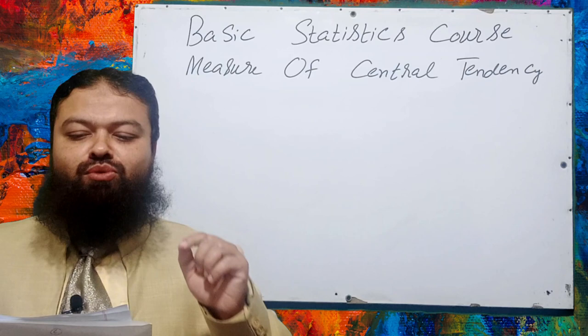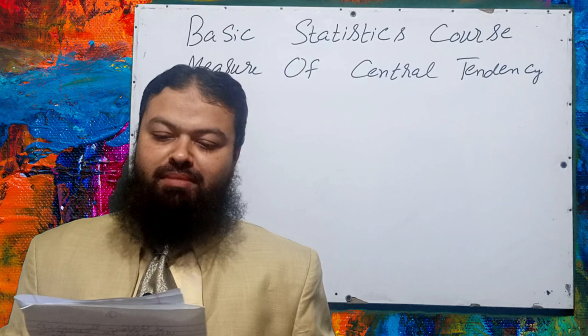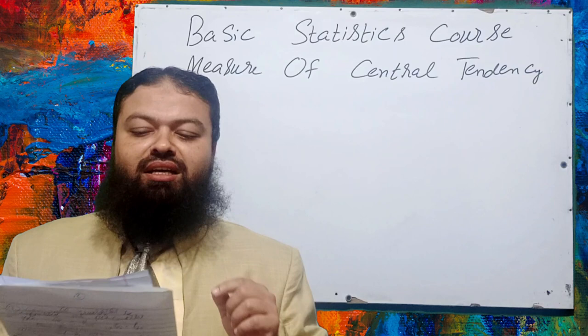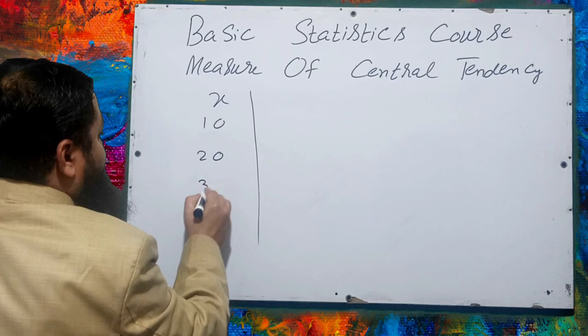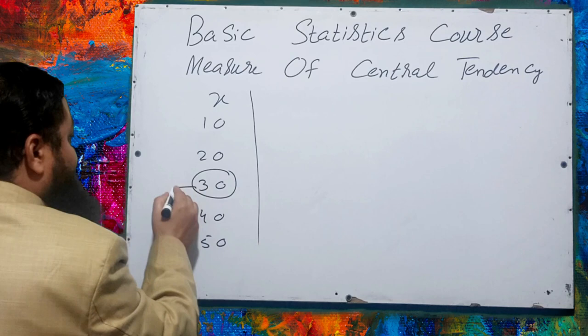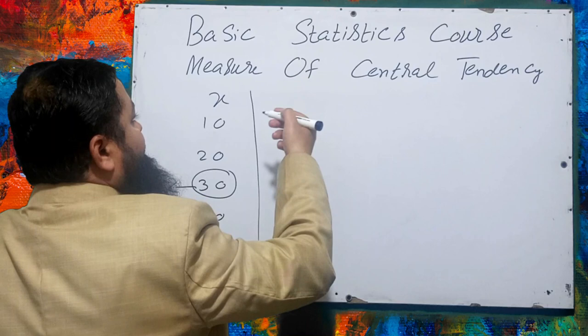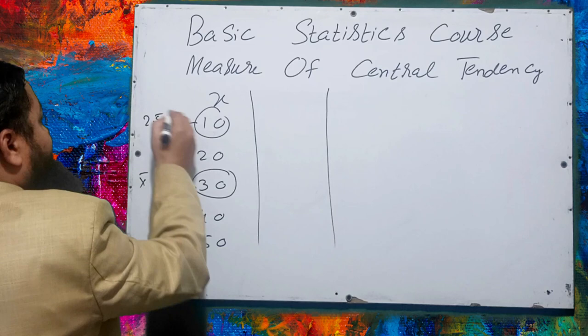Question number one: if each value of the given data is decreased by 25%, what will be the change in arithmetic mean, geometric mean, harmonic mean, and median? This is a very important multiple choice question. For example, if we have values of X: 10, 20, 30, 40, and 50, the mean of that data is 30.